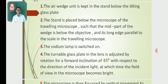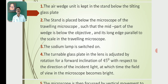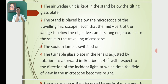The air wedge unit is kept in the stand below the turnable glass plate. The stand is placed below the objective of the travelling microscope such that the mid part of the wedge is below the objective, with its long edge parallel to the scale of the travelling microscope. The sodium lamp is switched on. The turnable glass plate is adjusted by rotation to a forward inclination of 45 degrees with respect to the direction of incident light, after which the field of view in the microscope becomes bright.